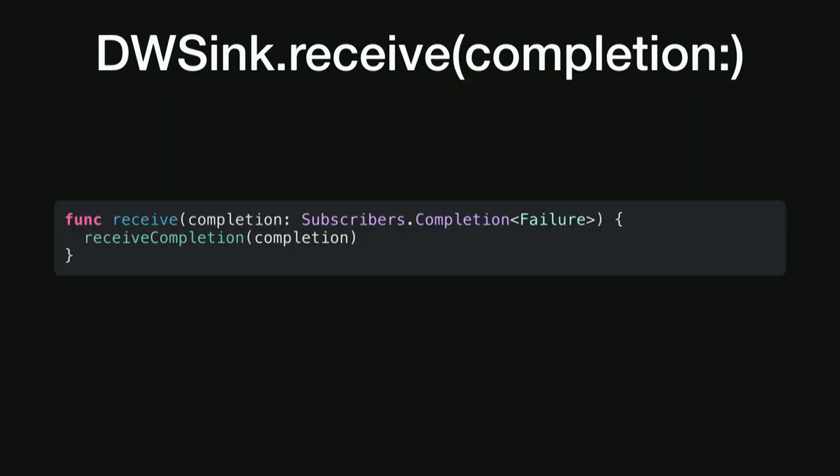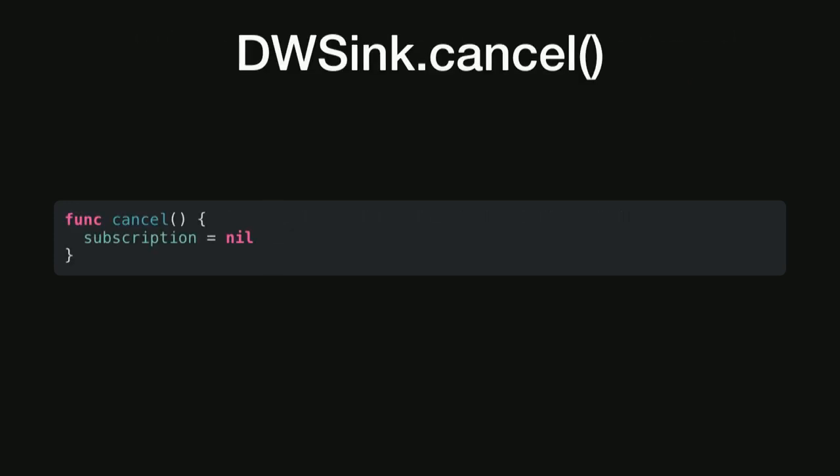The third receive method is called when we complete — this pretty much speaks for itself: we forward this completion event to the closure passed to the Sink method. The last method is cancel, which simply nils out the subscription. Because we're not sure if the publisher is holding on to the subscription we want to store it, but if we're canceling this whole thing we don't want to hold on to it. So if the subscriber doesn't need the subscription anymore, it should nil it out.